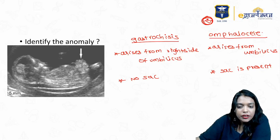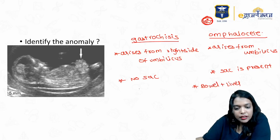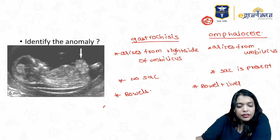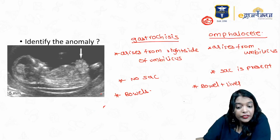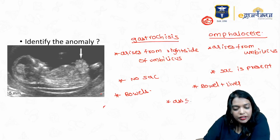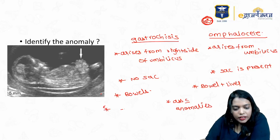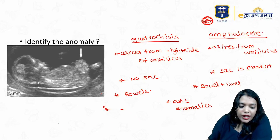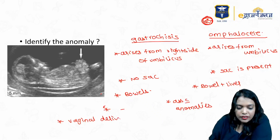In omphalocele, bowels plus liver can come out. In gastroschisis, it is mainly the bowels which come out. Fifty percent of omphalocele cases are associated with other anomalies, whereas gastroschisis is not. For delivery: in gastroschisis you can do vaginal delivery, while in omphalocele you can either do vaginal or cesarean.